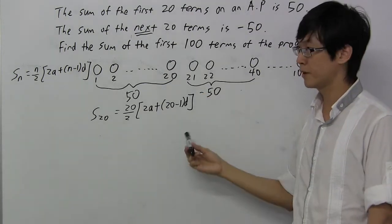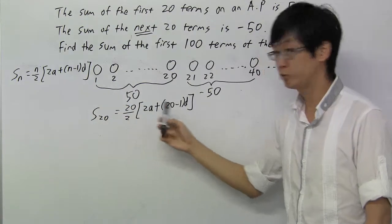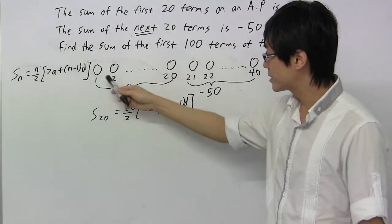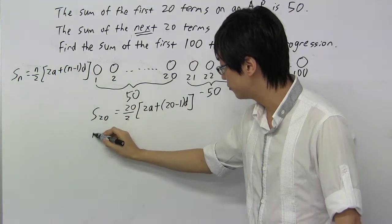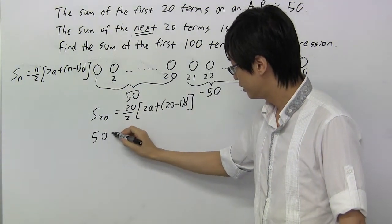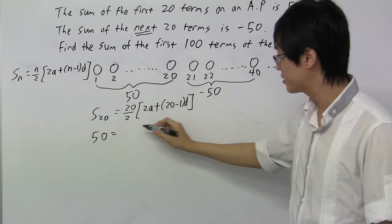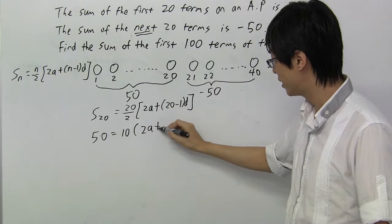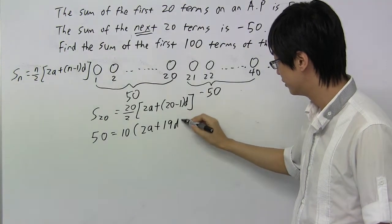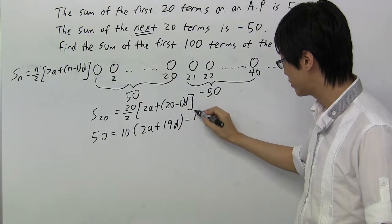I'll just apply the formula only, I'll just replace my N by 20. And we know that the sum of the first 20 terms is 50. So this whole thing is 50 equals to, let's simplify this. So we'll get 10 bracket 2A plus 19D. This is the first equation.